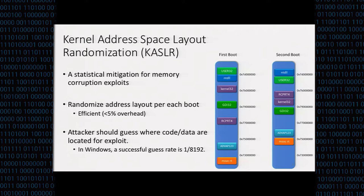Because it randomizes the address of all the code and data, for the attacker, if they want to launch a code reuse attack, they need to guess the address. So the success rate of the attacker can drastically be degraded by the number of entropies that ASLR can provide. For example, in Microsoft Windows, there are around over 8,000 places that kernel ASLR can randomize, so the attacker's success rate is degraded by that number.